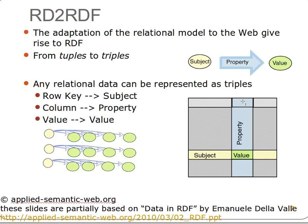Wherever the row and column meet, that is the value. Every table, even if it has a thousand columns and a thousand rows, can be converted into a standard format of triples. A thousand by a thousand with no empty cells would give us one million triples, but the good thing is they all share the same format, so we can integrate them easily with other RDF data.